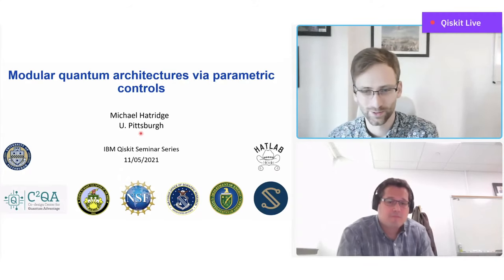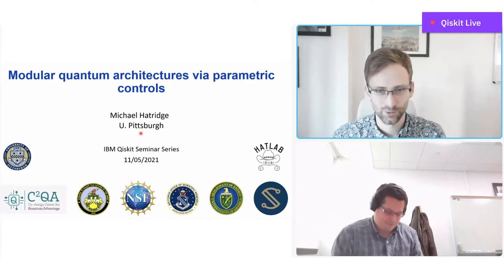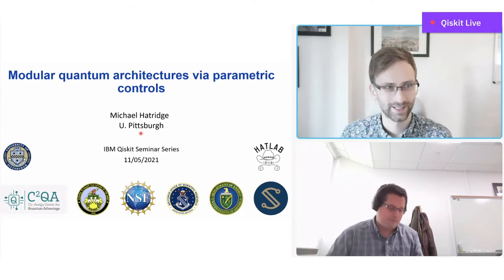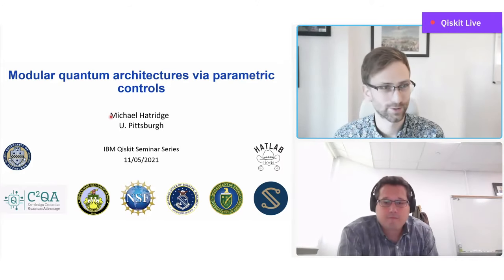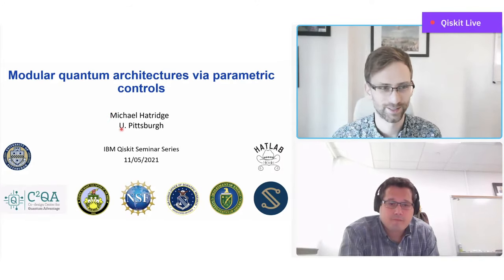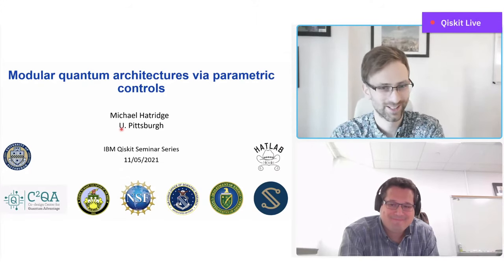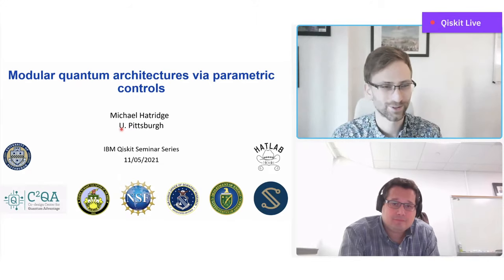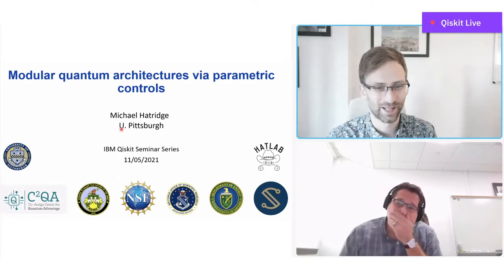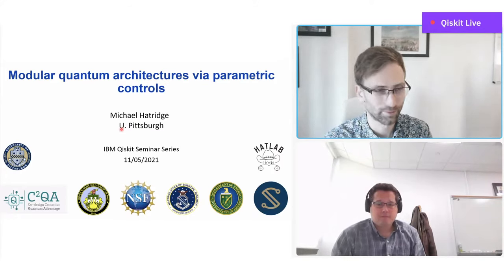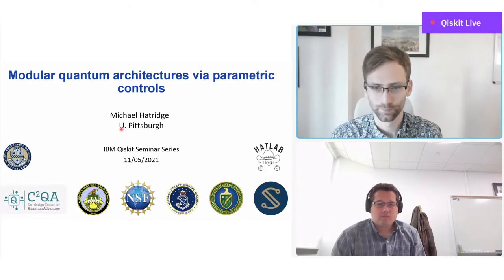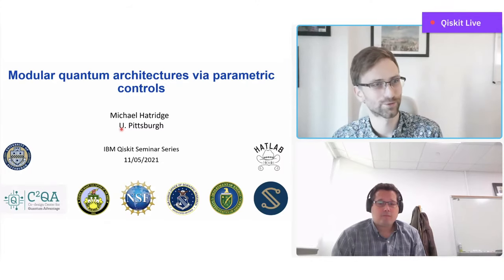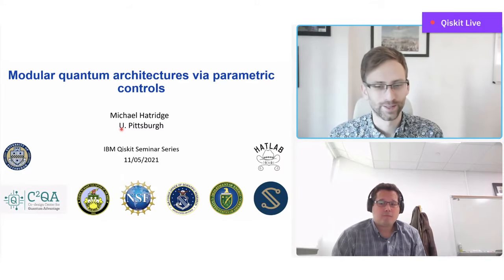Before we get to your talk, Michael, allow me to give folks a little bit of background. Michael Hattridge is an assistant professor of physics at the University of Pittsburgh. Michael received his bachelor from Texas A&M and his PhD from UC Berkeley under the supervision of John Clark, which is where I had the pleasure and privilege to first meet Michael — in many ways, he's maybe my first scientific advisor. Michael was then a postdoc at Yale University working with Michelle DeVore, after which Michael moved to start the Hatt lab at the University of Pittsburgh.